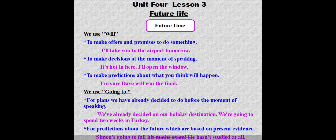We use 'will' to make quick decisions at the moment of speaking: 'It's hot in here, I'll open the window,' or 'I'm very hungry, I'll order food.' We also use 'will' to make predictions about what you think will happen: 'I'm sure Dave will win the final.'